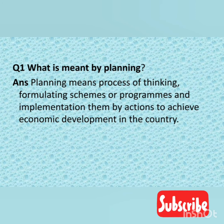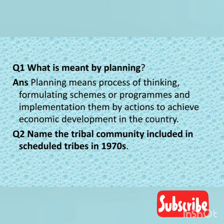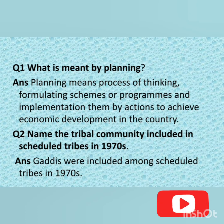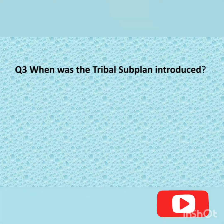Question number two: Name the tribal community included in Scheduled Tribes in the 1970s. The answer is Gaddis were included among Scheduled Tribes in the 1970s. This is a Muslim community found in northern India. Some migrated to Pakistan. They are also called Gaddis Rajput.